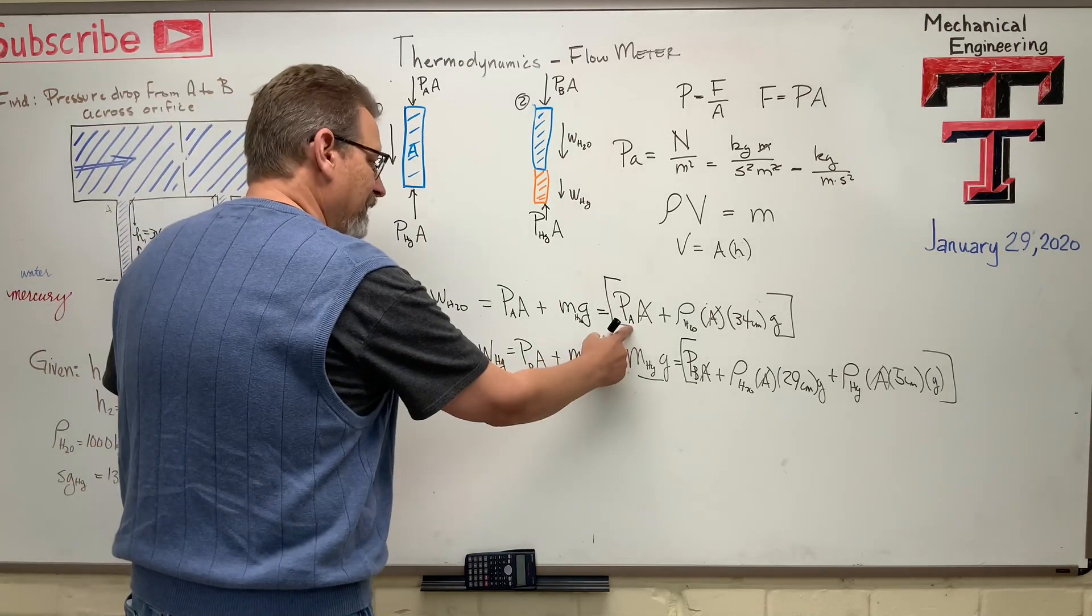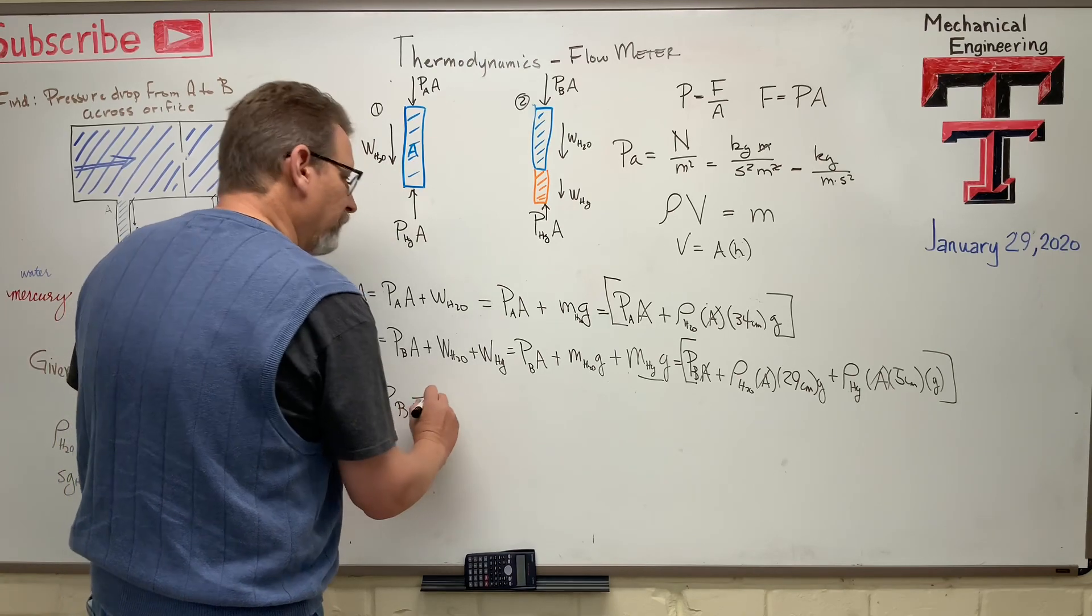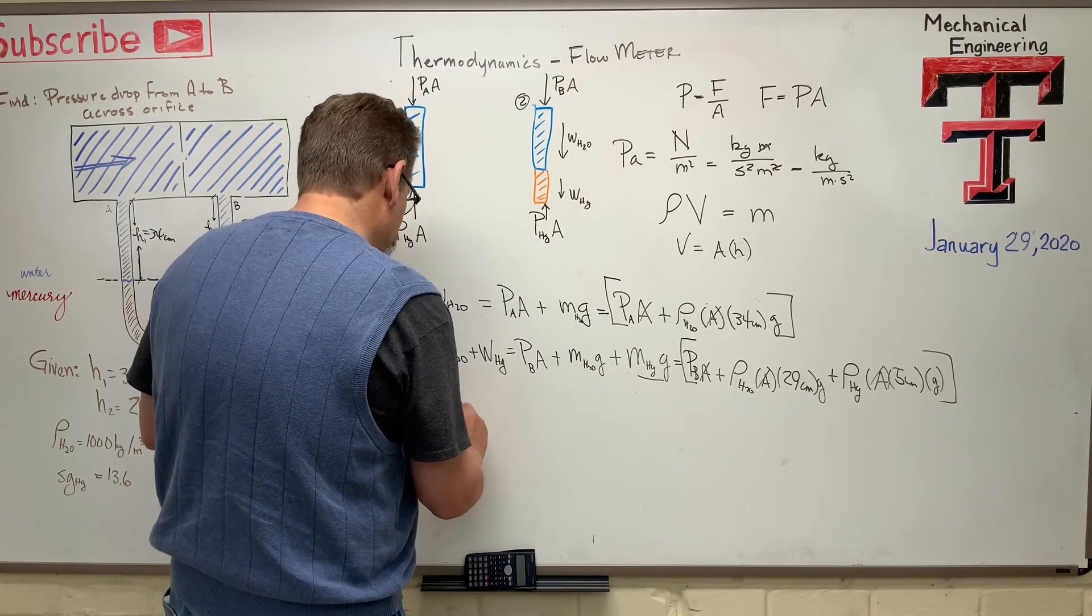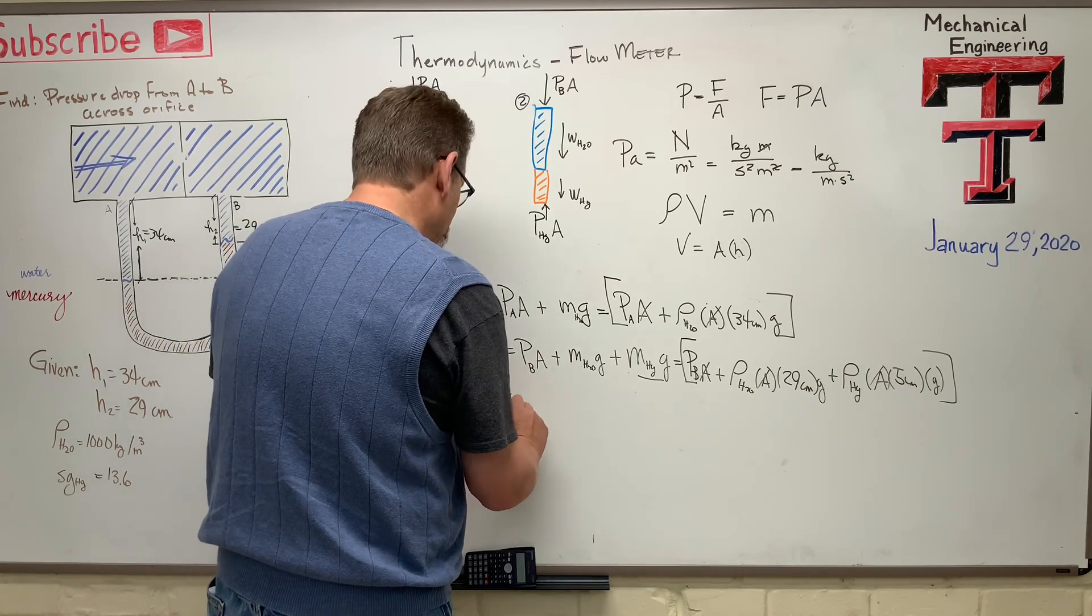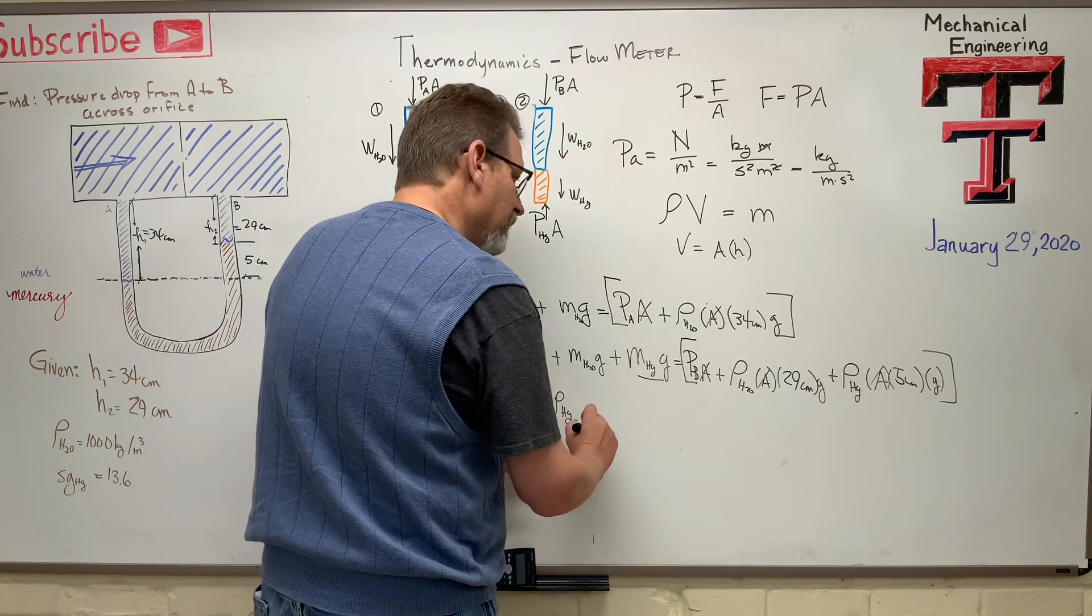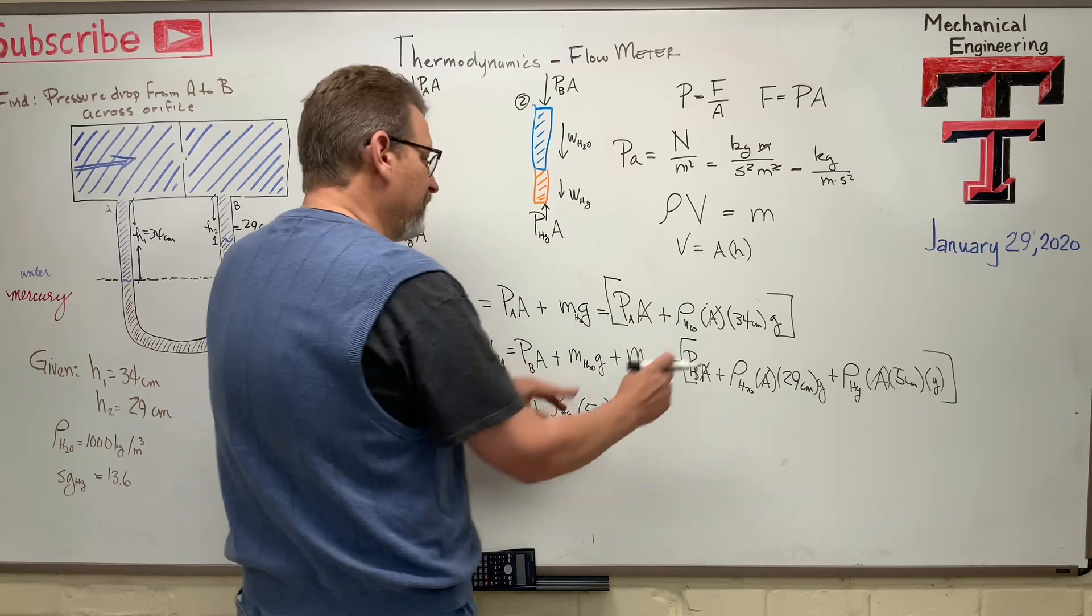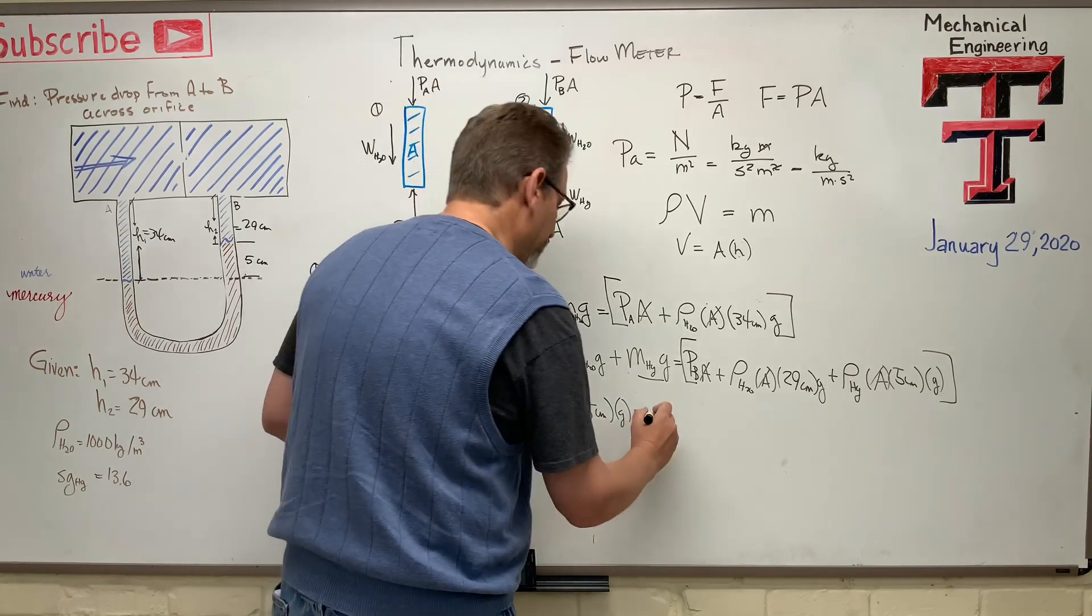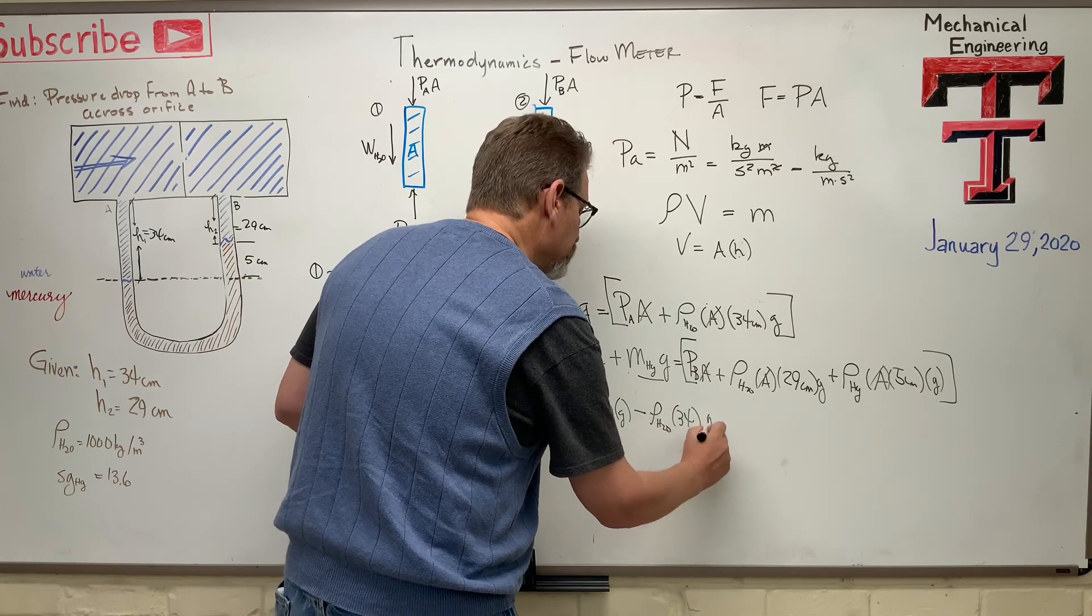So P_A, that's that guy, and then I'm going to move this guy back to the other side, so minus P_B is equal to, I've got to equal to all that stuff. Rho_H2O times 29 centimeters times G. Plus rho of HG times 5 centimeters times G, and then this one, I had to move from the P_A side. I had to move it to the other side, so it's going to be minus, this is algebra stuff here. Rho_H2O times 34 times G.